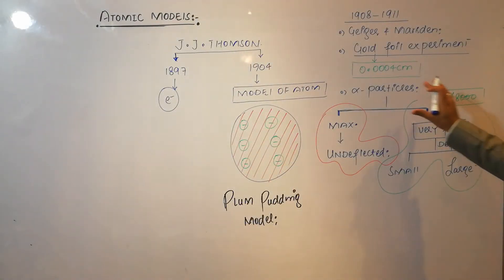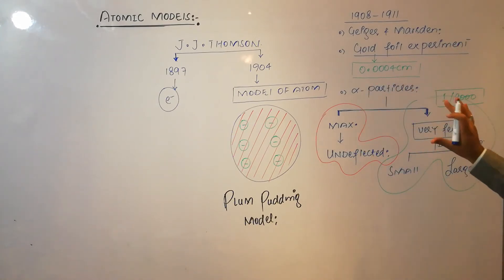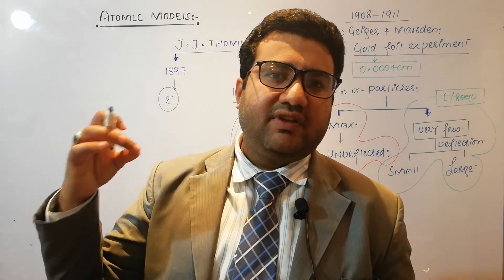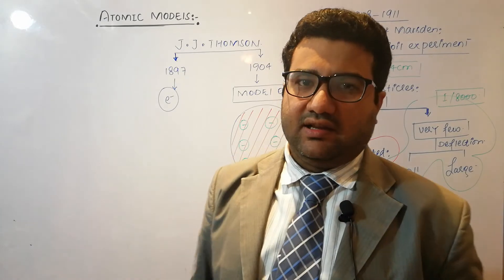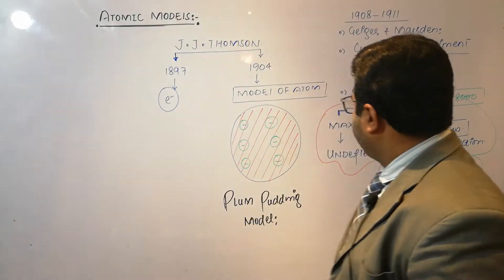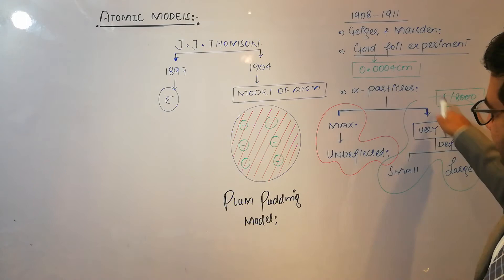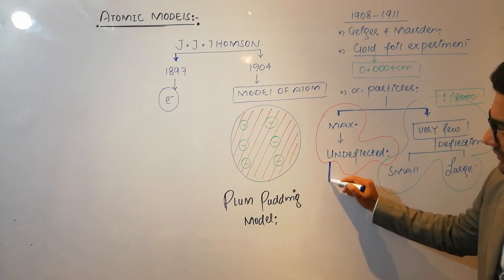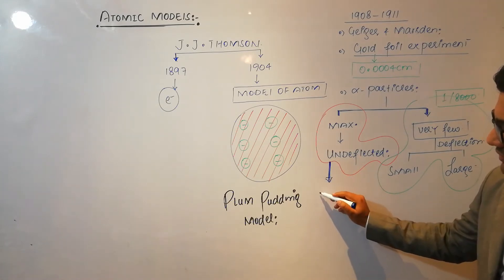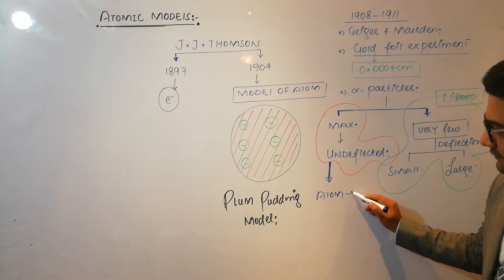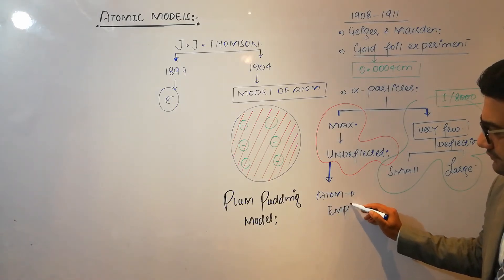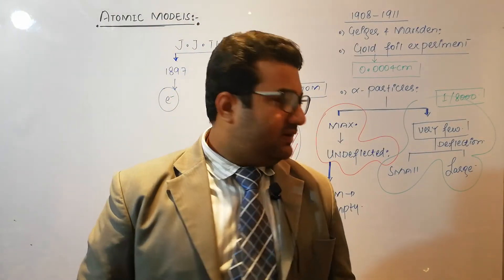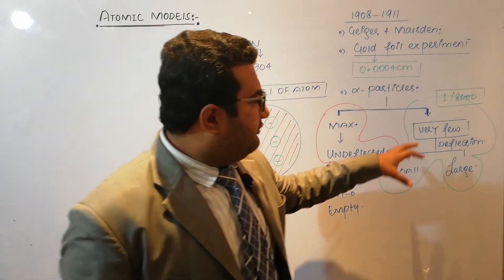Geiger and Marsden made these observations and discussed them with Rutherford, who was very astonished and made his now-famous statement. They explained that most alpha particles remained undeflected because most of the atom is empty, which is why most alpha particles pass straight through the gold foil.